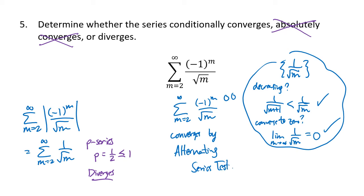When we take the absolute value of the terms we get a divergent series, but the original series with the alternating sign converges. That's what we mean by conditionally convergent. So this series is conditionally convergent.